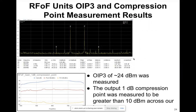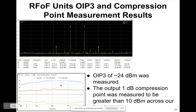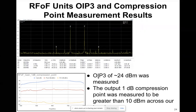These are the RFoF fiber output IP3 measurements. We obtained an output IP3 of 24 dBm and the output 1 dB compression point is greater than 10 dBm. The IP3 value is good, but you need a higher dynamic range for handling strong RFI signals.